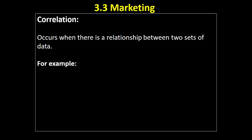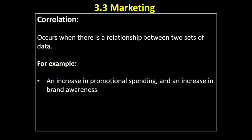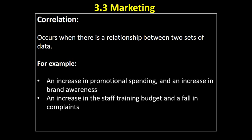Here are some examples of data where there may be correlation. An increase in promotional spending and an increase in brand awareness — we would hope that as we increase our promotional spending, people are more aware of our brand. We may also see an increase in the staff training budget and then a fall in the level of complaints. If our staff training is effective, it will make our workers more skilled, and therefore there should be fewer customer complaints, resulting in higher quality products.